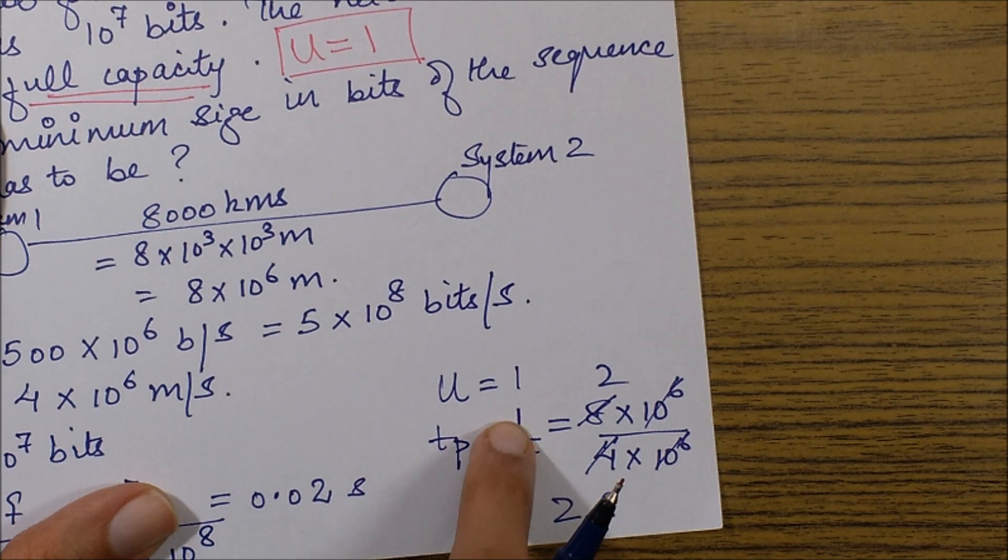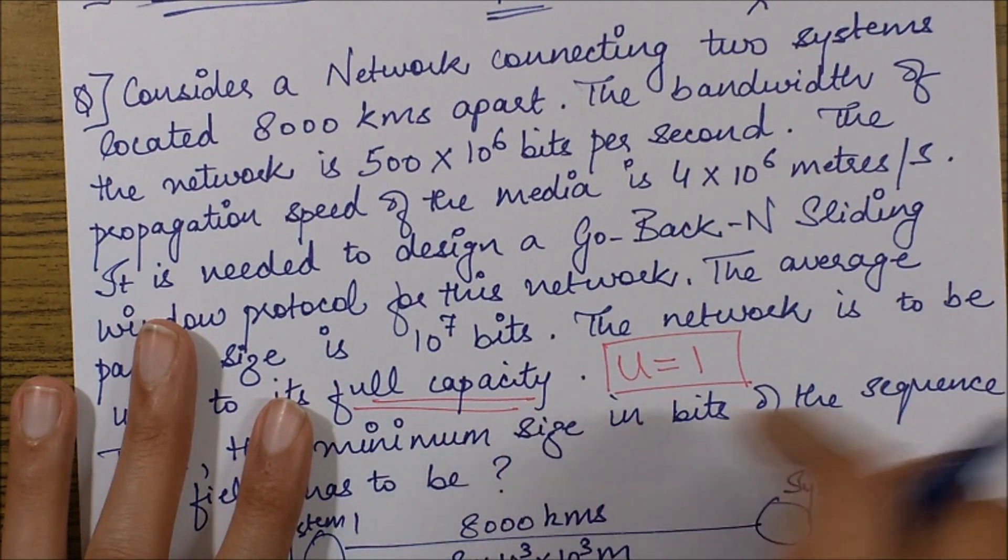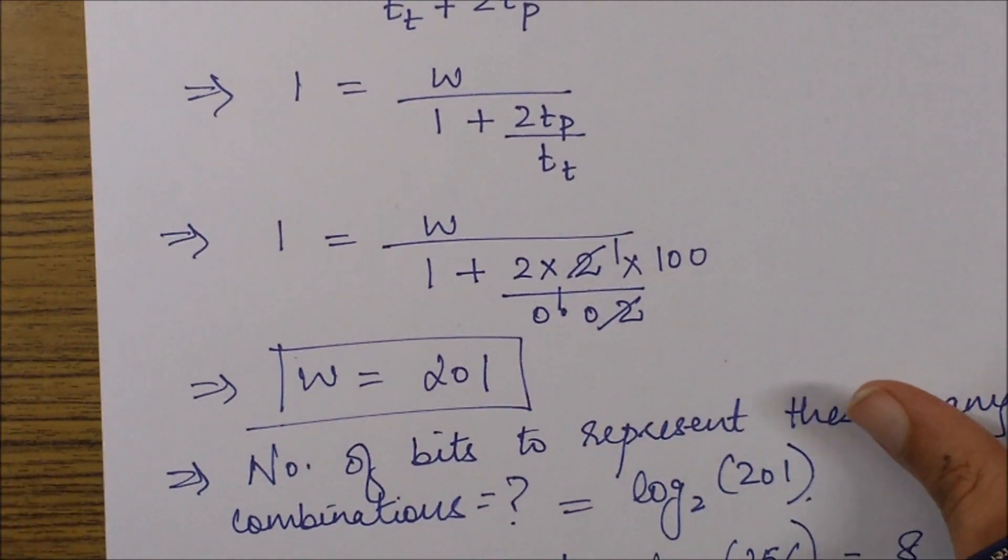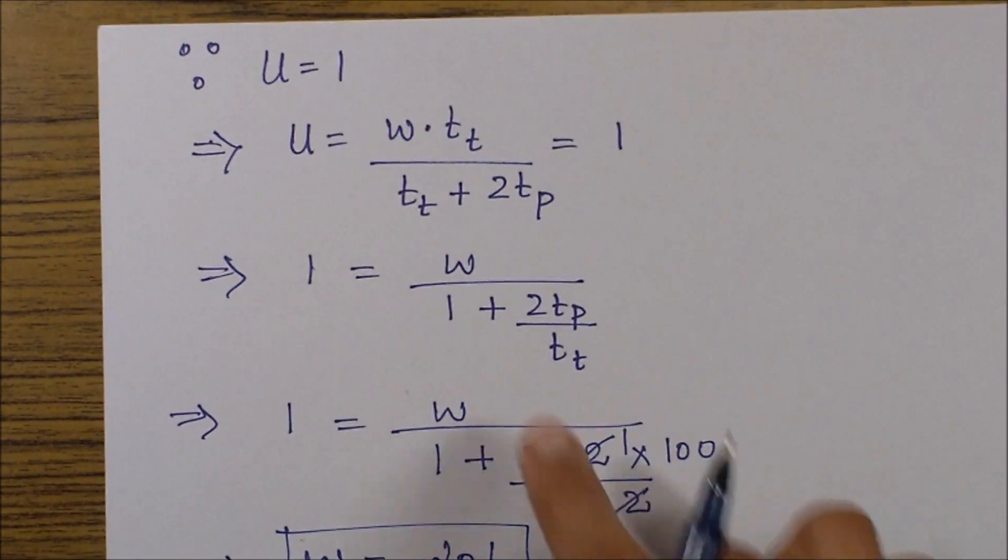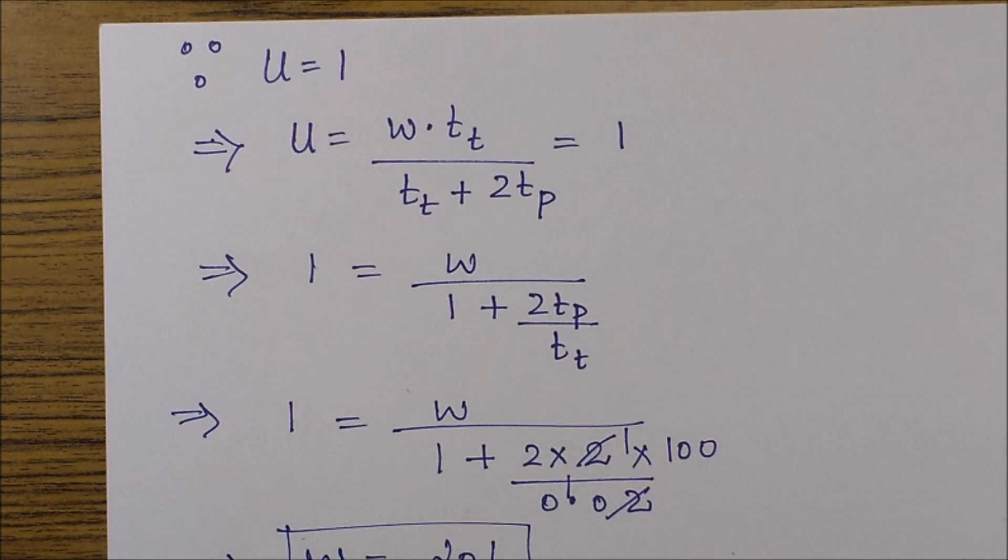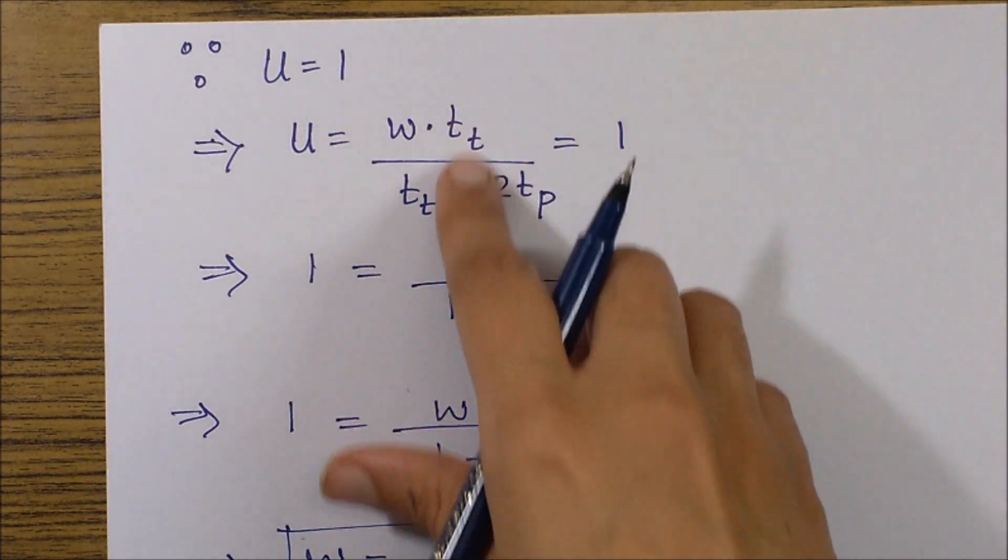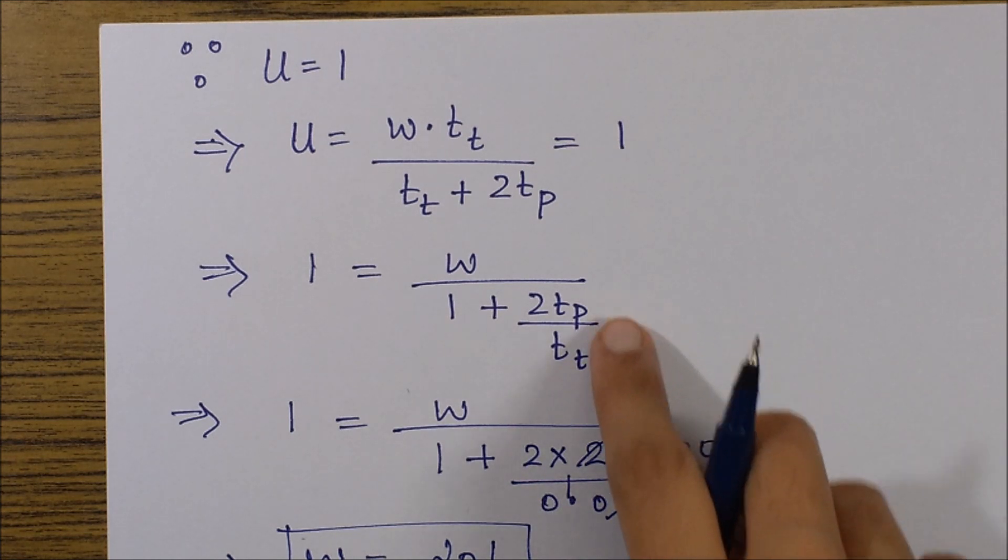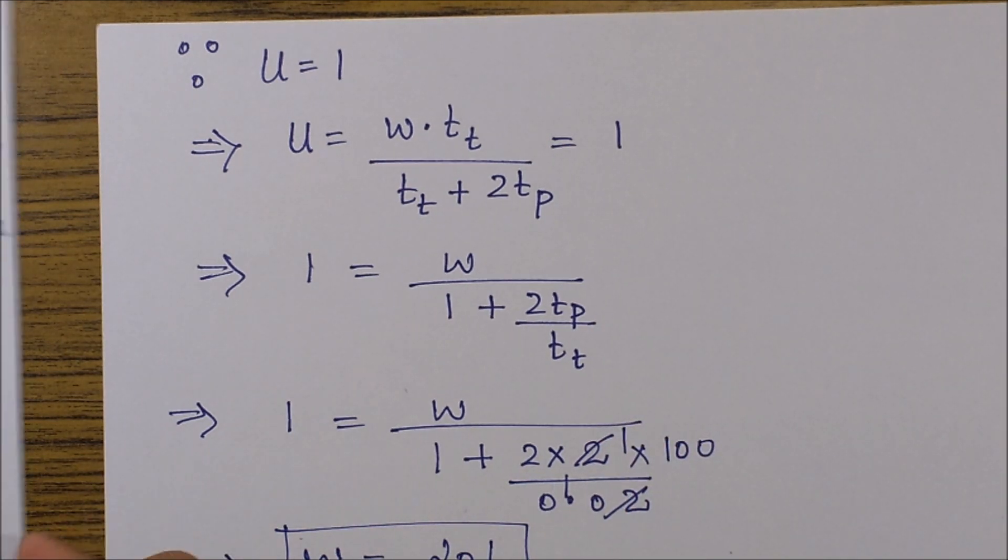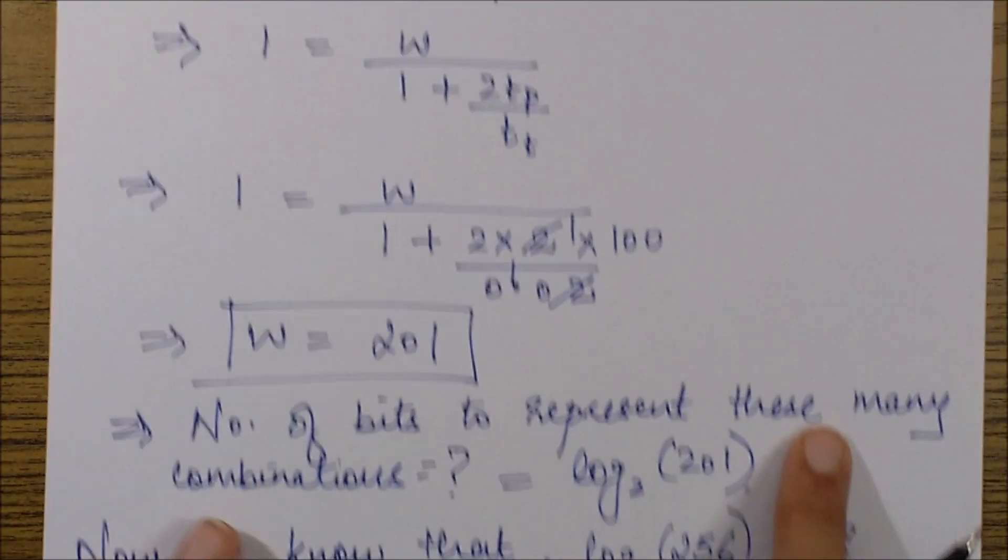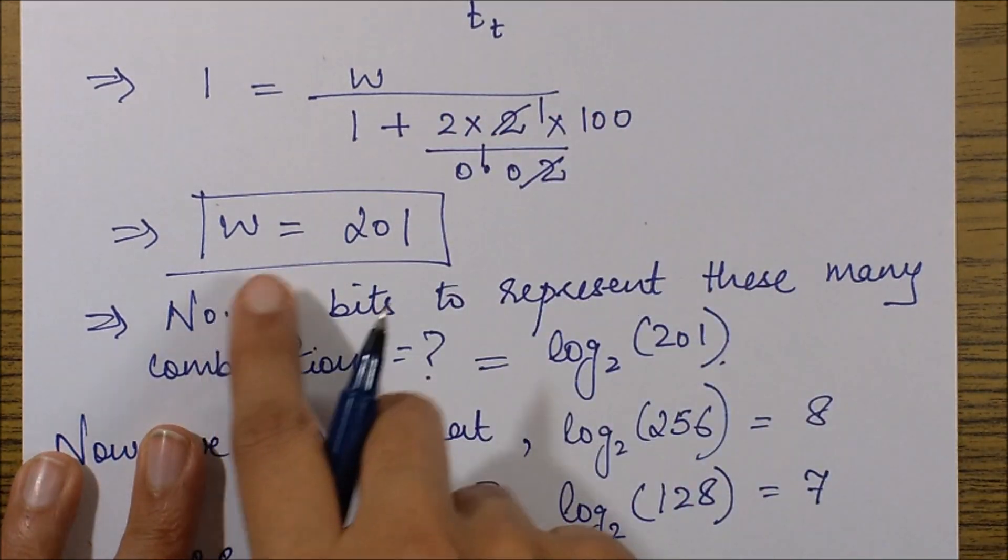U was given as 1, since it was saying it is a full capacity channel. When we put these two values in our U formula, we have our U formula over here. When I use its simplified form of dividing the numerator and denominator by tt, I just put my value of tp and tt into this. tp was 2 seconds and tt was 0.02 seconds. When I put these two values and simplify, I get my W as 201.